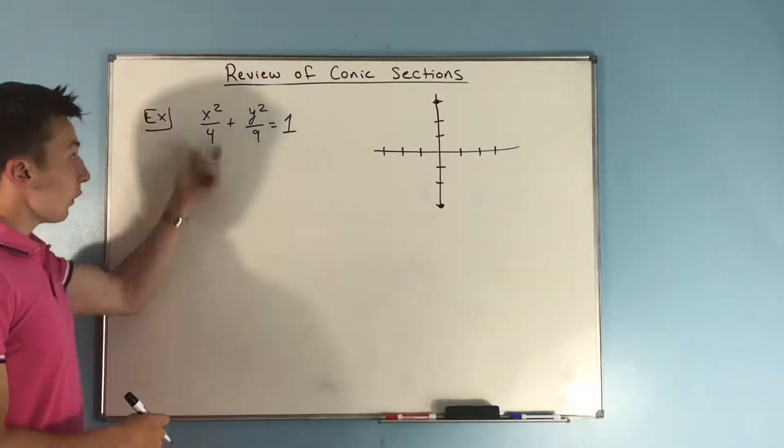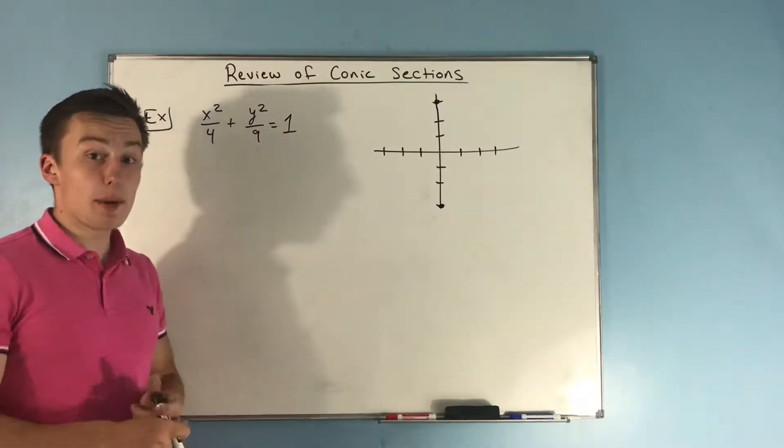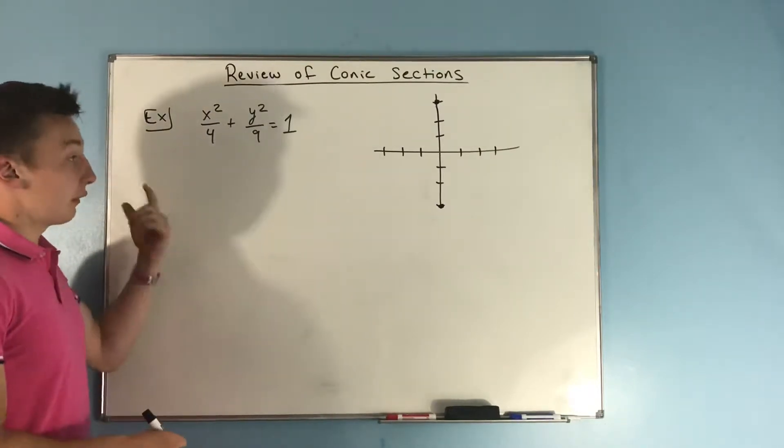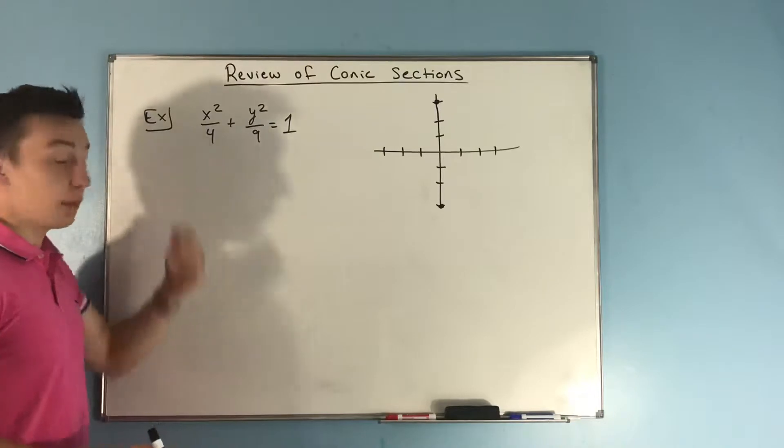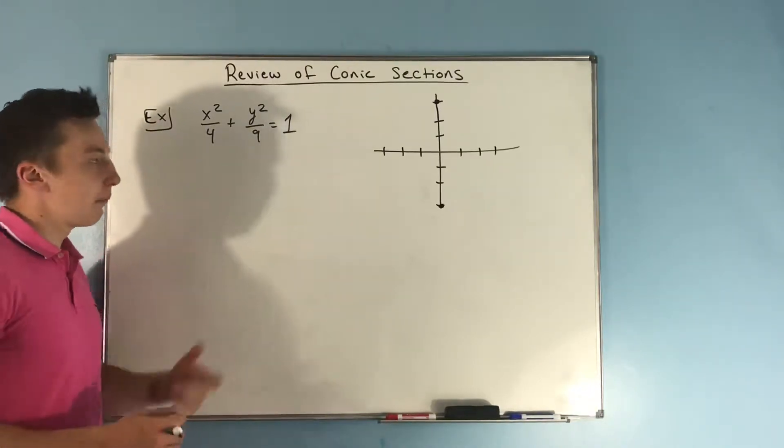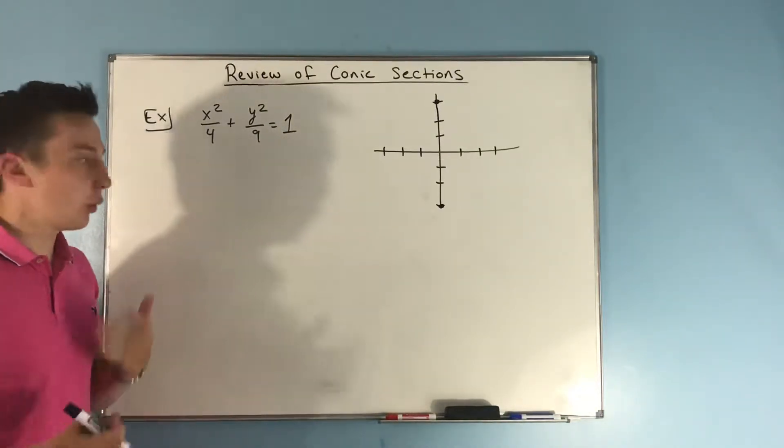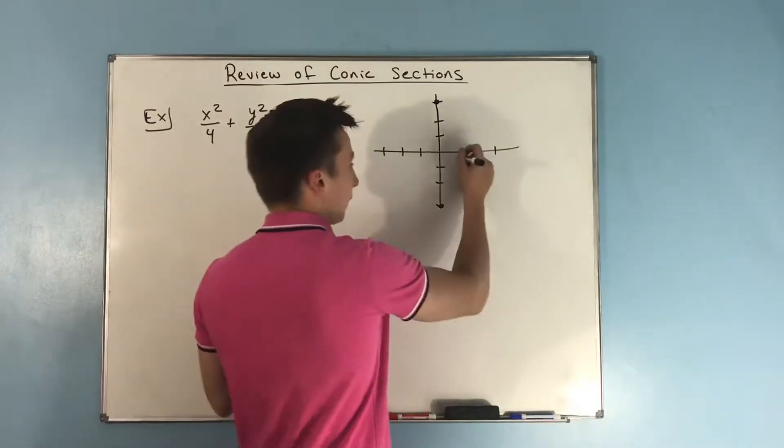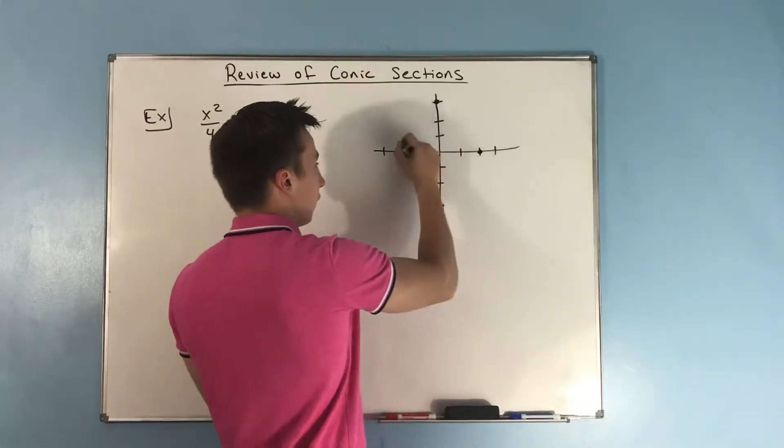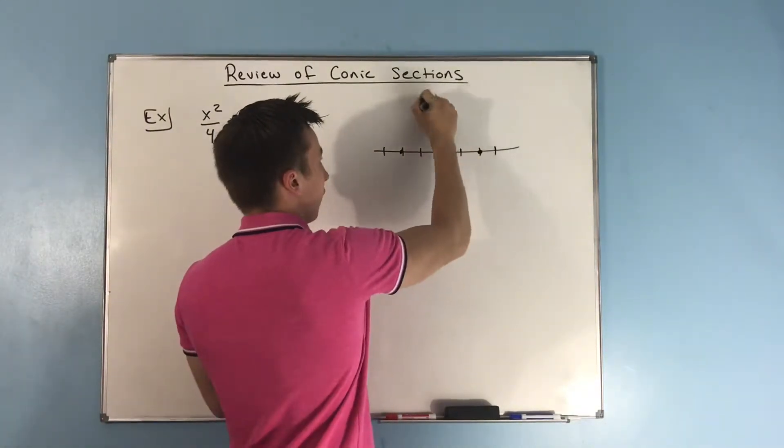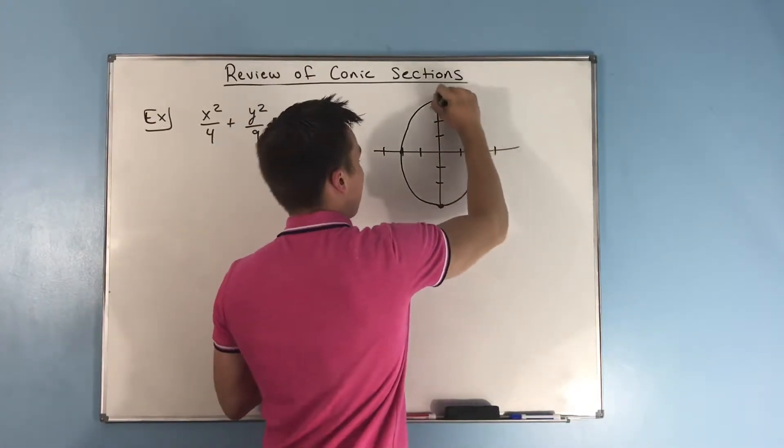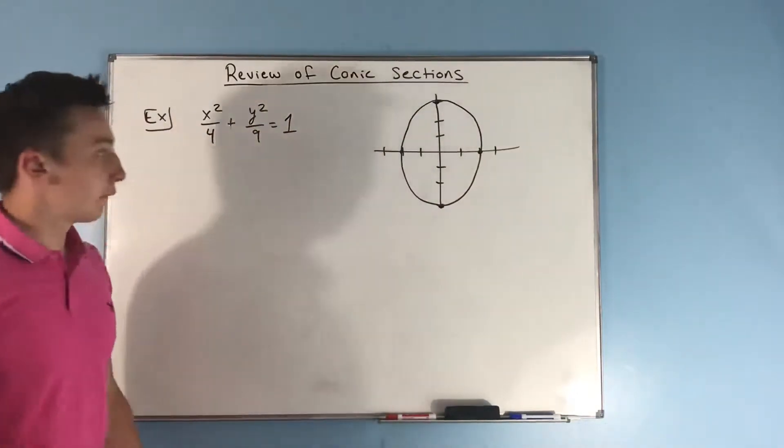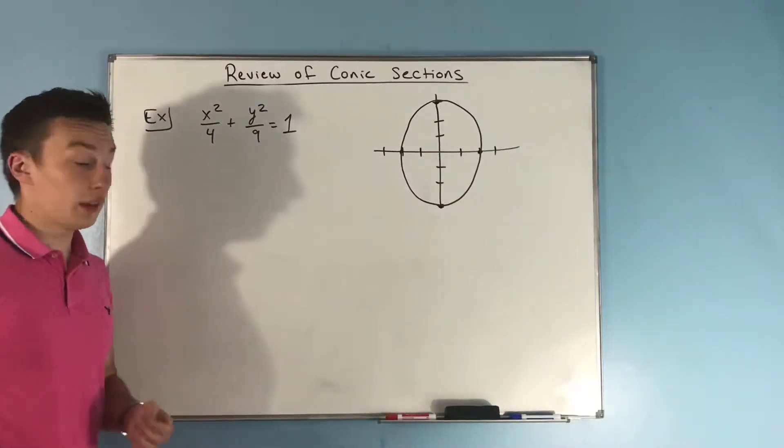And now, we have to deal with our semi-minor axis, which is going to be, the length of that will be the square root of this denominator for the smaller number. And the square root of that is going to be 2, so we know that on the x-axis we'll be going out to 2 here, 2 here. And then we'll connect. And there you go, that's our ellipse.